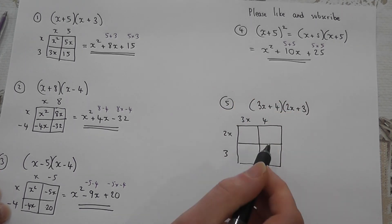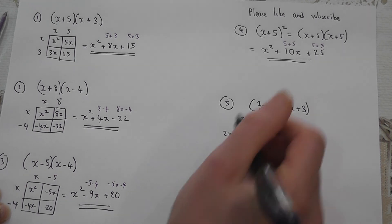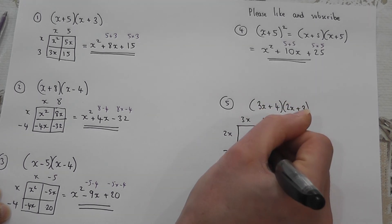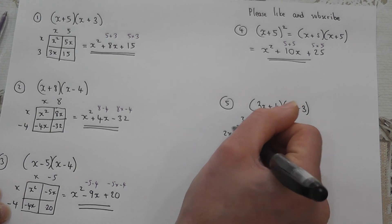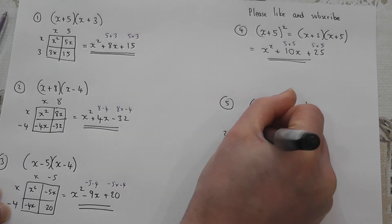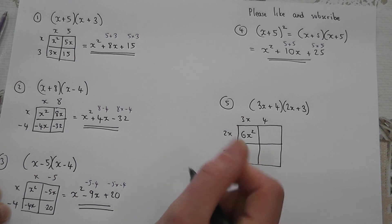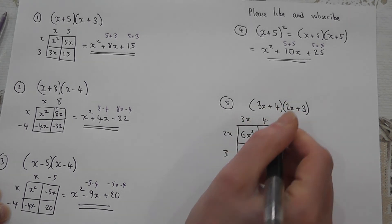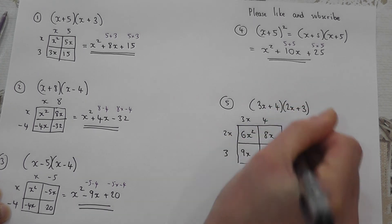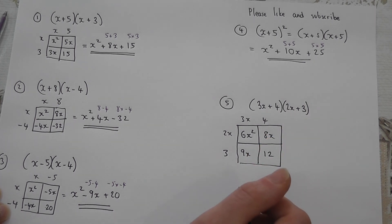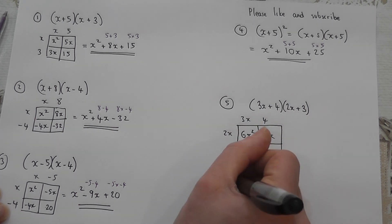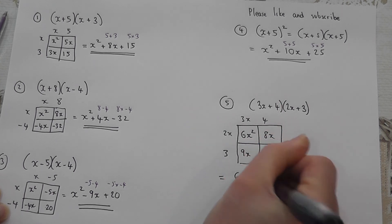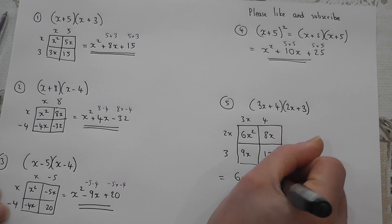However when we expand this now we must be super careful. Now yes x times x is x squared. But 3x times 2x is actually 6x squared. Then 3 lots of 3x is 9x. 4 lots of 2x is 8x. And 4 times 3 is 12. So the answer becomes 6x squared. 9x plus 8x is 17x. There's a 12 down here.